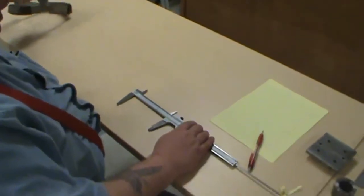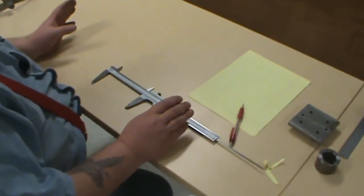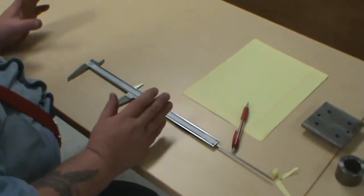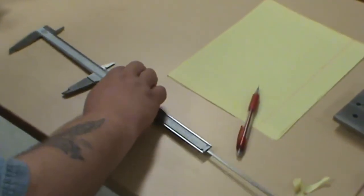Now this vernier caliper is also known as a Mauser pattern caliper. Peter and Paul Mauser, the German gun makers, they developed this caliper. The original caliper wouldn't have had all these little niceties on it.